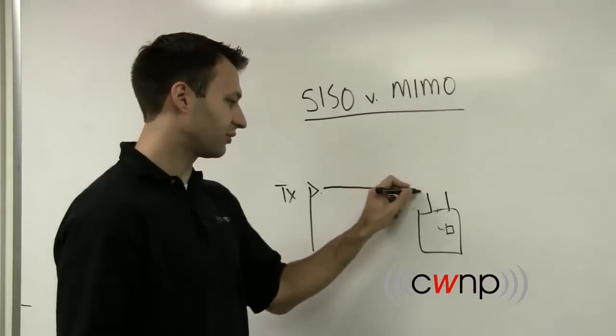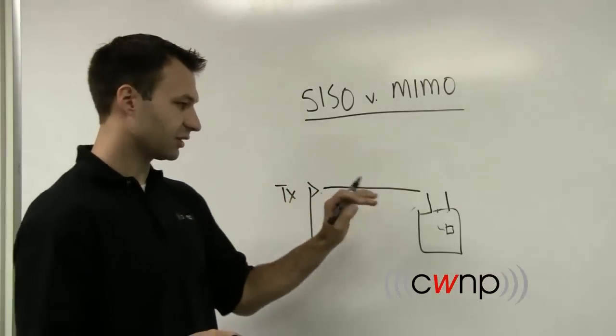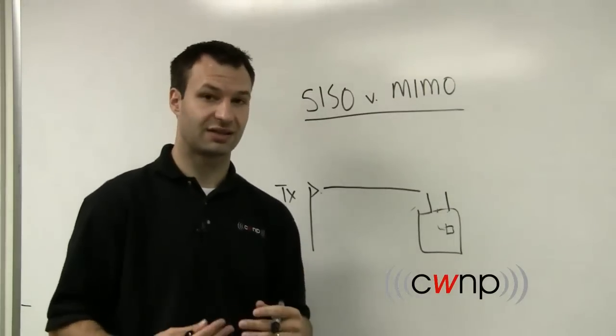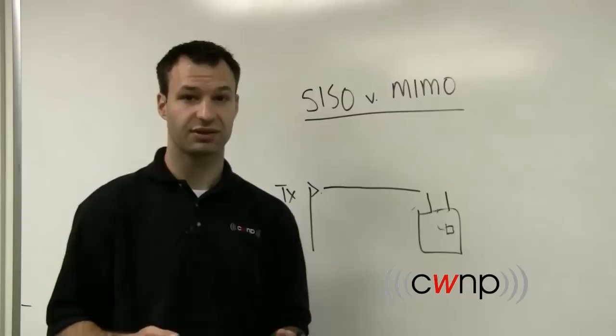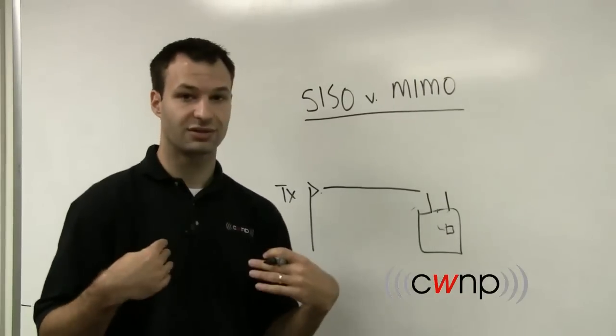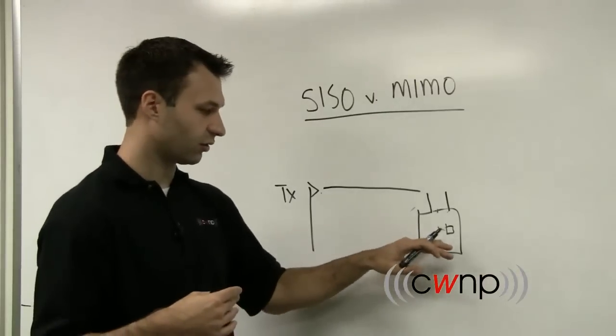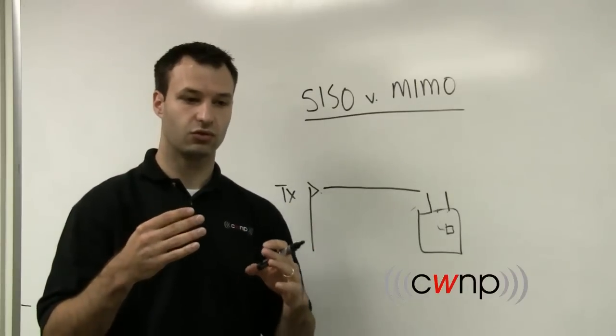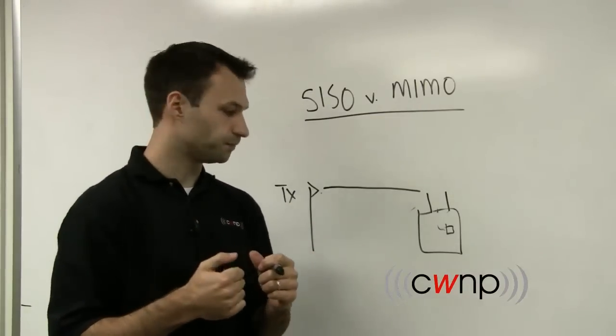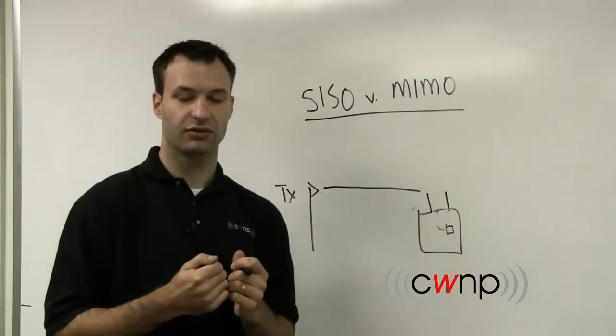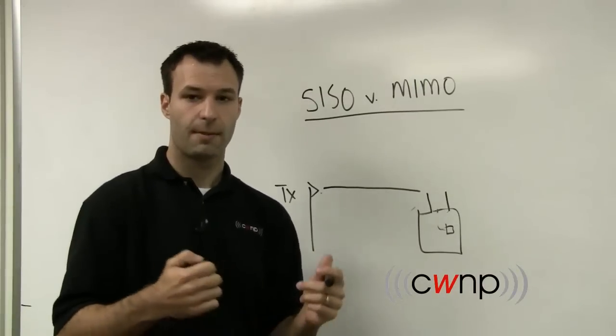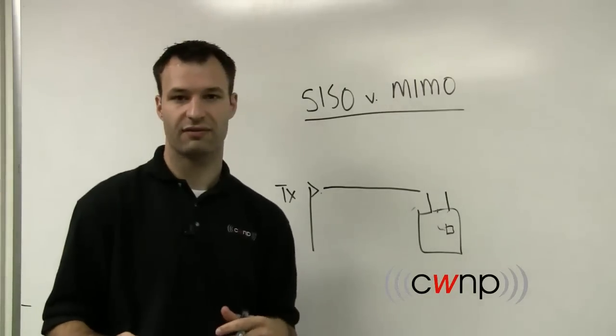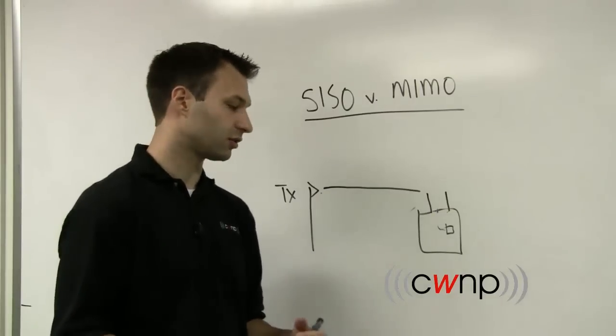So when this transmitter transmits a signal, that same signal will be received by both of these antennas, and both of these antennas are going to process that signal. So it's not just that they're sampling that signal to determine which one is better. They're both going to receive it and both going to process it. And then the intelligence or the logic within the access point is going to interpret both of those signals, and it's going to basically take both of those signals and determine what the original signal was based on a combination of those two signals.